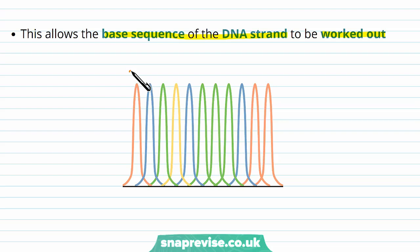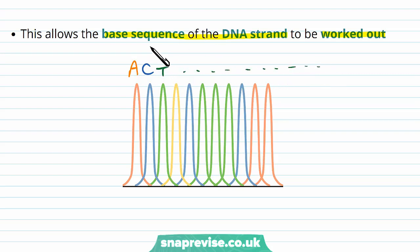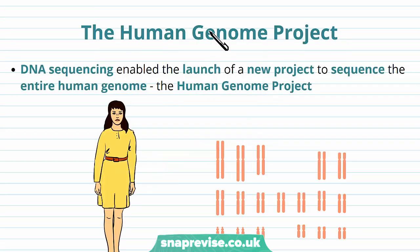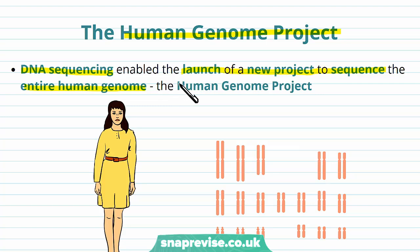So the shortest fragment might end on an A, the next shortest on a C, the next shortest on a T, and eventually you get the whole order of nucleotides and you've sequenced that length of DNA. There's an important scheme you need to be aware of called the Human Genome Project. DNA sequencing enabled the launch of a new project to sequence the entire human genome — the Human Genome Project.